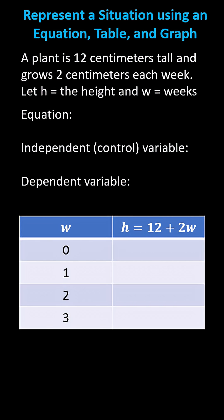A plant is 12 centimeters tall and grows 2 centimeters each week. Let h equal the height in centimeters, and w equal the number of weeks.